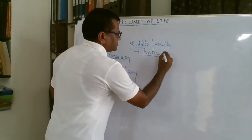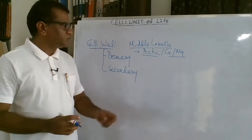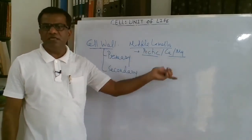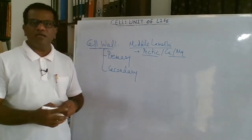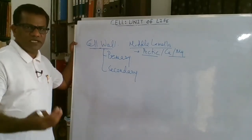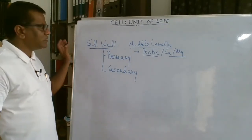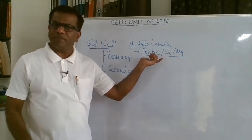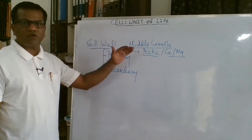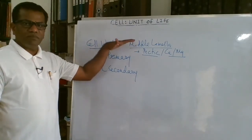The middle lamella is made up of calcium and magnesium pectates — pectic substances. These calcium and magnesium pectates are deposited in this amorphous middle lamella layer. These pectic substances show partial solubilization in ripe fruits, and therefore ripe fruits become soft when these pectic substances are solubilized. The middle lamella is the outermost layer of the cell, though it is not part of any single cell — it glues the cells together.